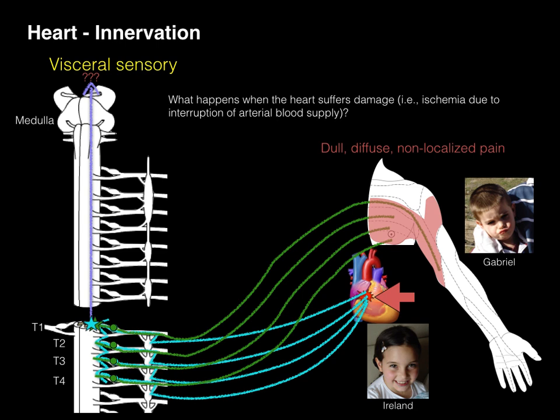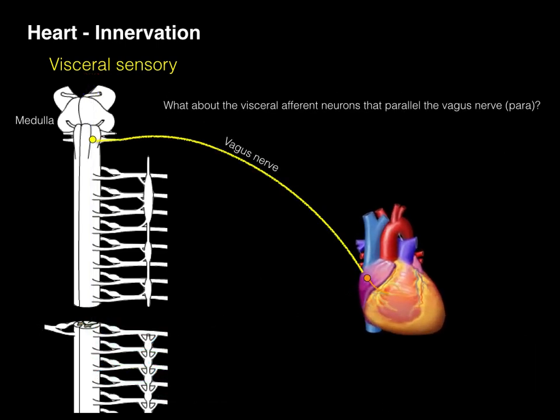This results in a dull, diffuse, non-localized pain — that is angina pectoris, the referred pain from heart problems. As for visceral afferent neurons paralleling the vagus nerve for parasympathetics, these are again sensing changes in blood pressure and blood chemistry, serving cardiac reflexes. Since there are no associated spinal nerves at this level, you do not have somatic referred pain, but patients will sometimes report nausea or other similar sensations — that is how the brain refers that type of change. And that is the innervation of the heart.